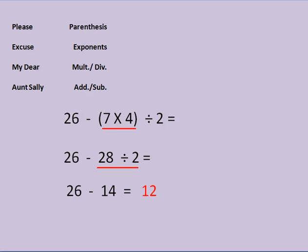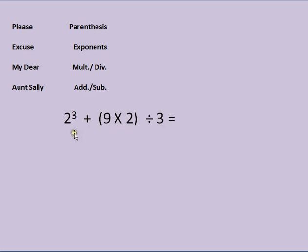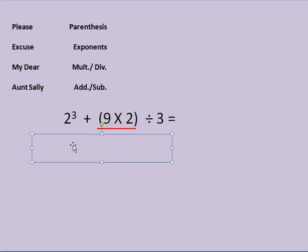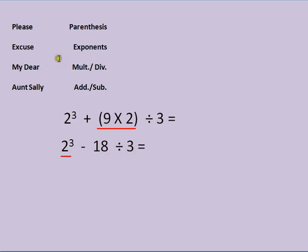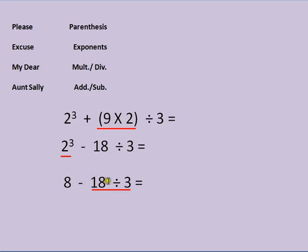I'm going to try a more difficult one now: 2 to the third power plus the product of 9 times 2, divided by 3. Just like before, I look at 'Please Excuse My Dear Aunt Sally' — I have parentheses, so I do that one first. 9 times 2 is 18, so simplified it becomes 2 to the third power minus 18 divided by 3. Now I have an exponent. I've done my parentheses, so next I do the exponent: 2 to the third power — 2 times 2 times 2 — is 8. Simplified: 8 minus 18 divided by 3.